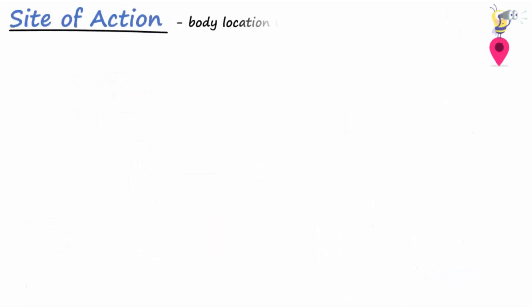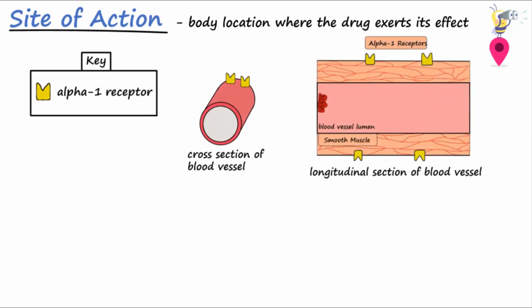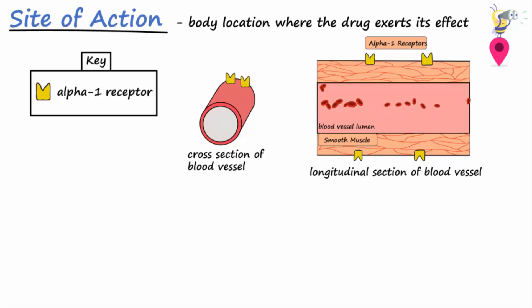Site of action refers to the specific body location where the drug exerts its effect. For example, site of action for drugs that activate or block alpha-1 receptors is anywhere where the alpha-1 receptors are located, like on smooth muscles lining blood vessels or on smooth muscles of the urethra and ureter.